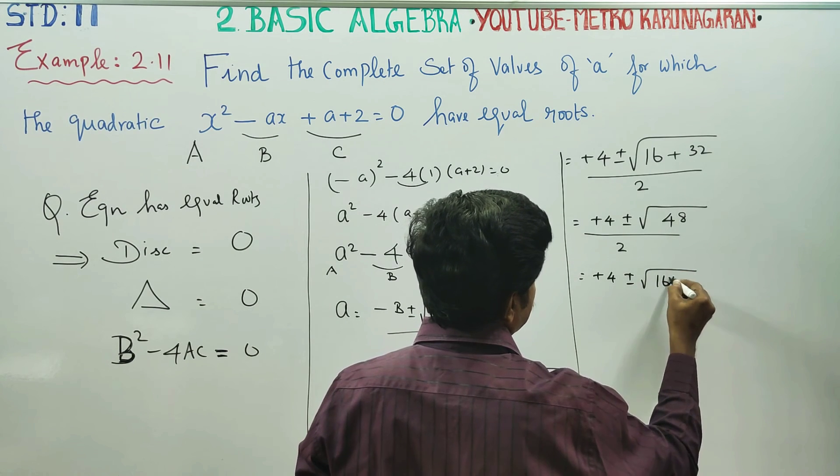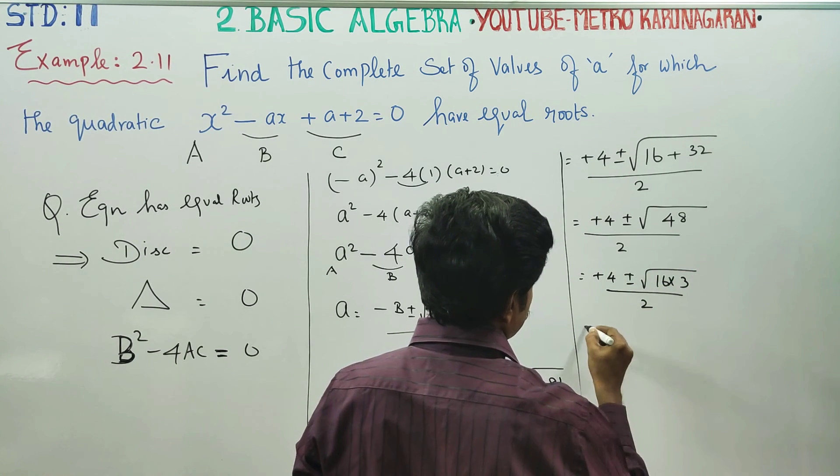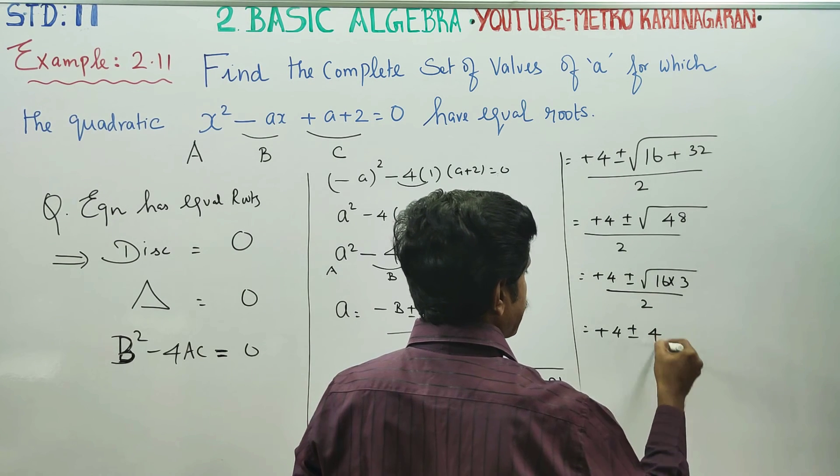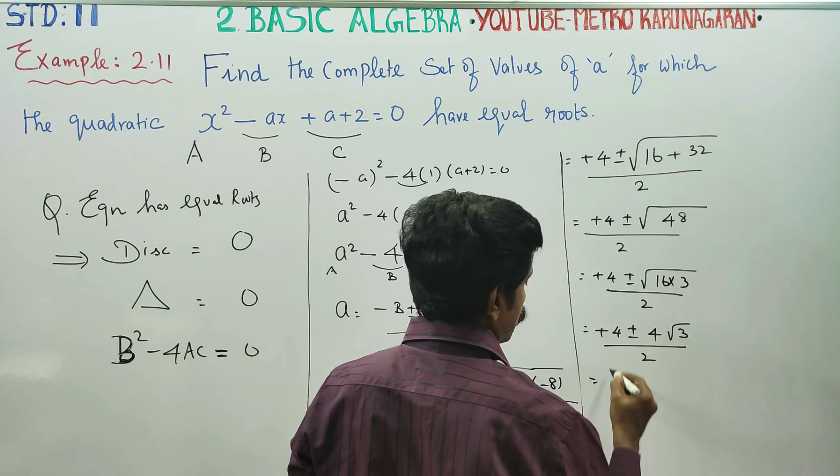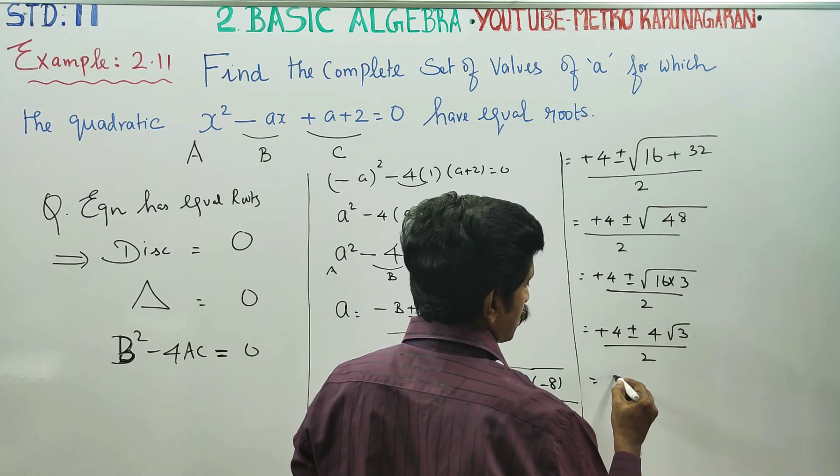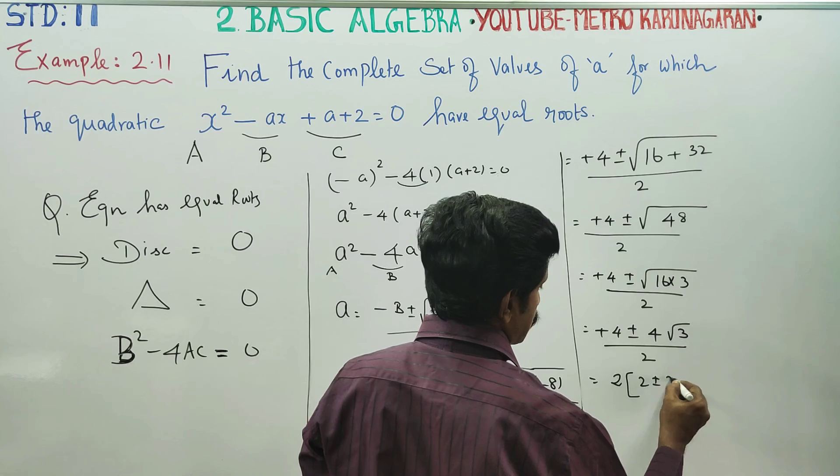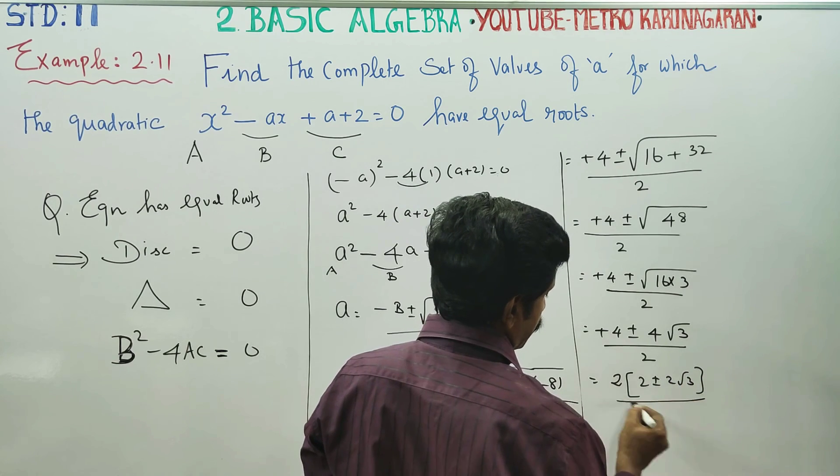This can be written as 16 into 3 by 2. Plus 4 plus or minus 4 root 3 by 2. 2 plus or minus 2 root 3 by 2.